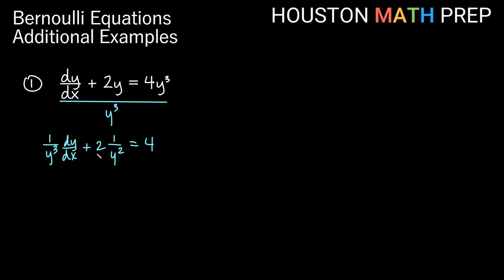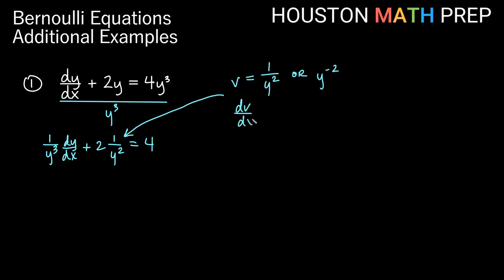Now, whatever power of y we have next to our function here is our substitution for v. This tells us v is equal to 1 over y squared, or y to the minus 2. That is our substitution. We'll also need a substitution for dy/dx, so we need to find dv/dx. Taking the derivative with respect to x, the power rule gives us negative 2 y to the minus 3 — also written as 1 over y cubed — and the chain rule gives us times dy/dx.